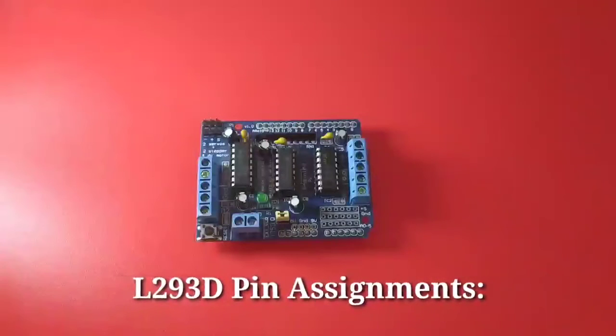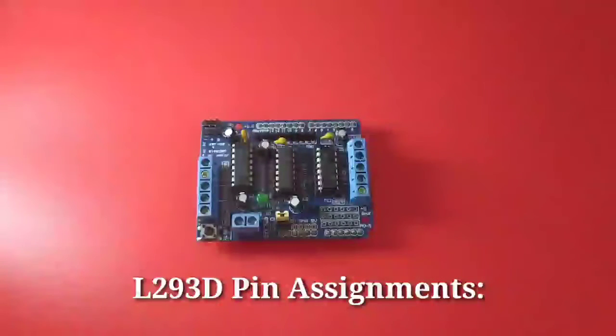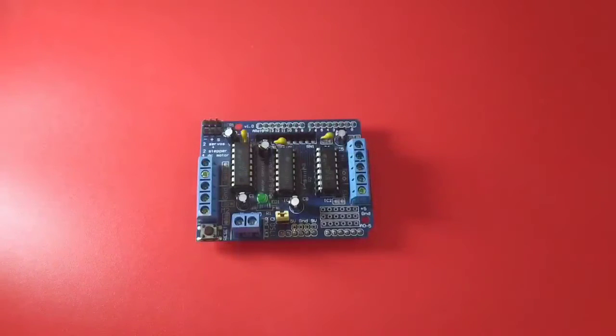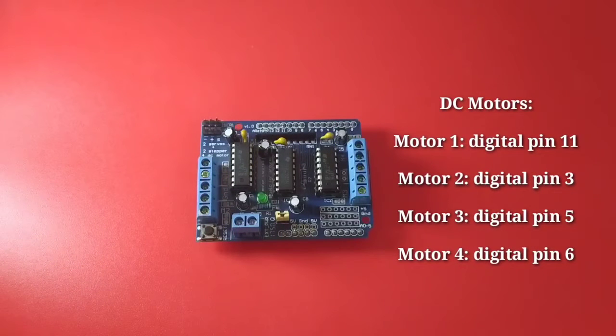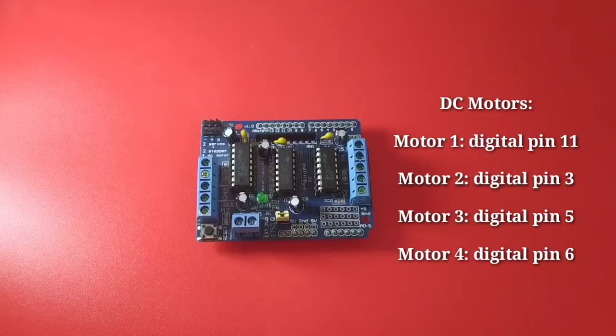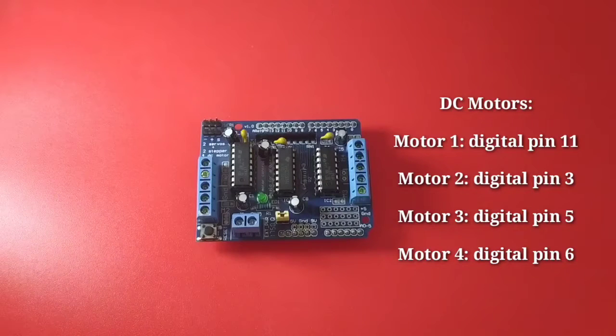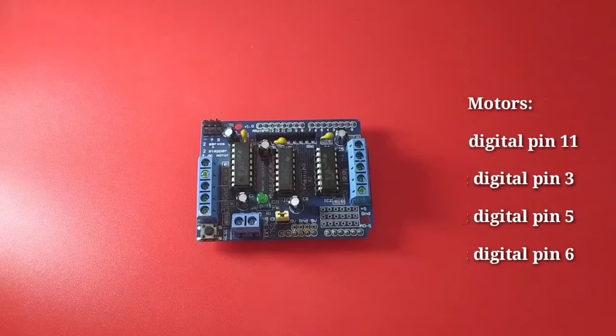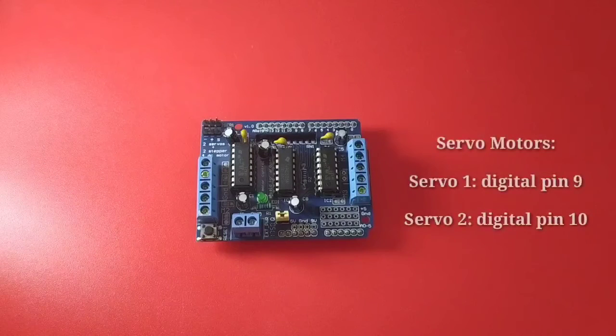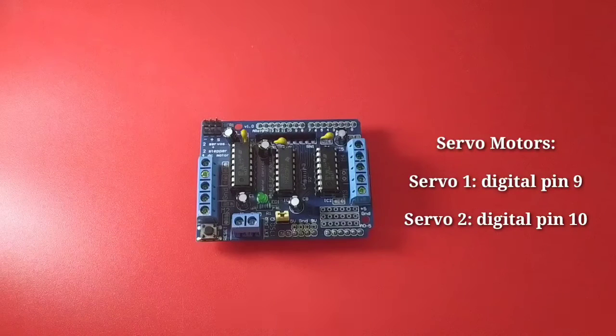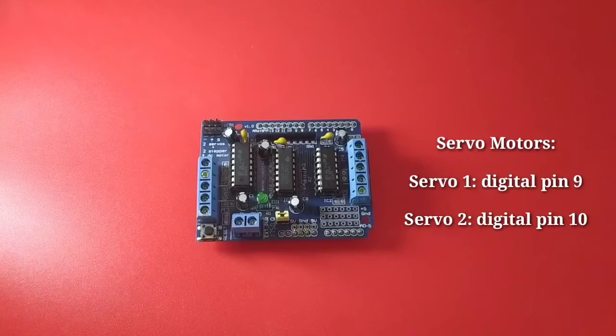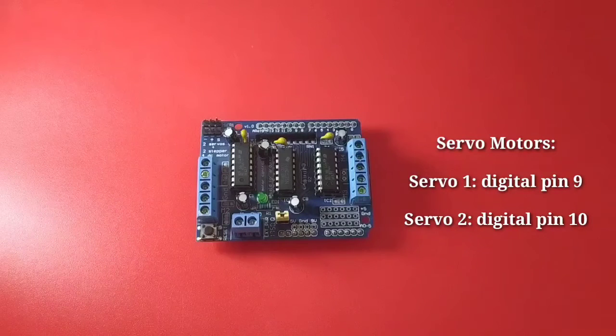The L293D pin assignments is as follows. For the DC motors, digital pin 11 for motor 1, digital pin 3 for motor 2, digital pin 5 for motor 3, digital pin 6 for motor 4. For servo motors, digital pin 9 for servo 1, and digital pin 10 for servo 2.